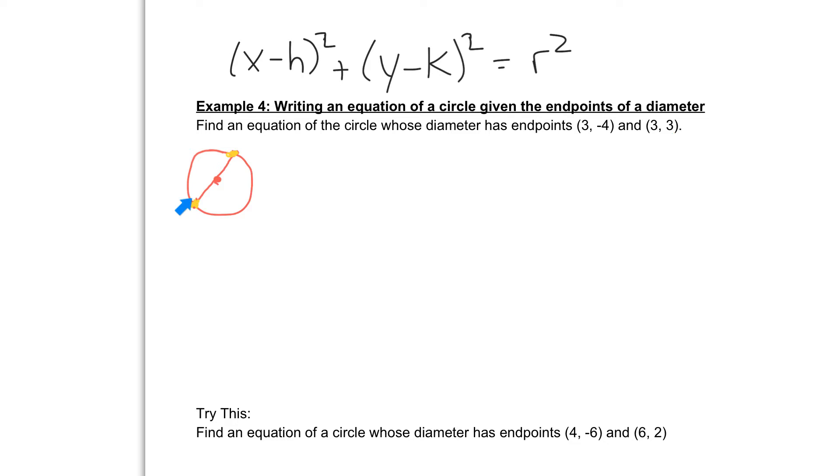So if we know these two points, and in order to write our equation we need the h, the k, and the r, the first thing we need to know is what is this point here in the middle? What is the center of our circle?